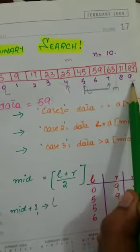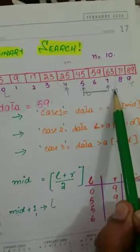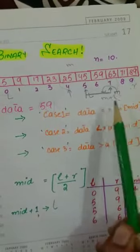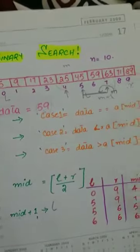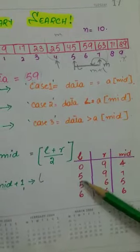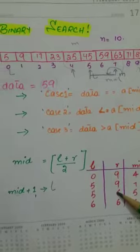Now our right value will change. Now our right value will be mid plus 1. So you can see that our left is 5, and our right change will be 5 plus 1.